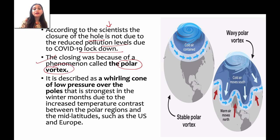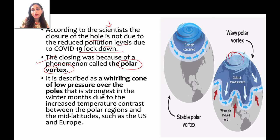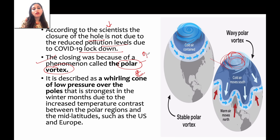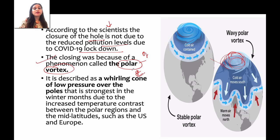However, why did it close? Because of the Polar Vortex. The Polar Vortex is basically low pressure and cold waves that are very strong at the poles during winter months — a low-pressure whirling cone. Scientists believe this closure is due to the Polar Vortex, not necessarily because of reduced pollution from international efforts.